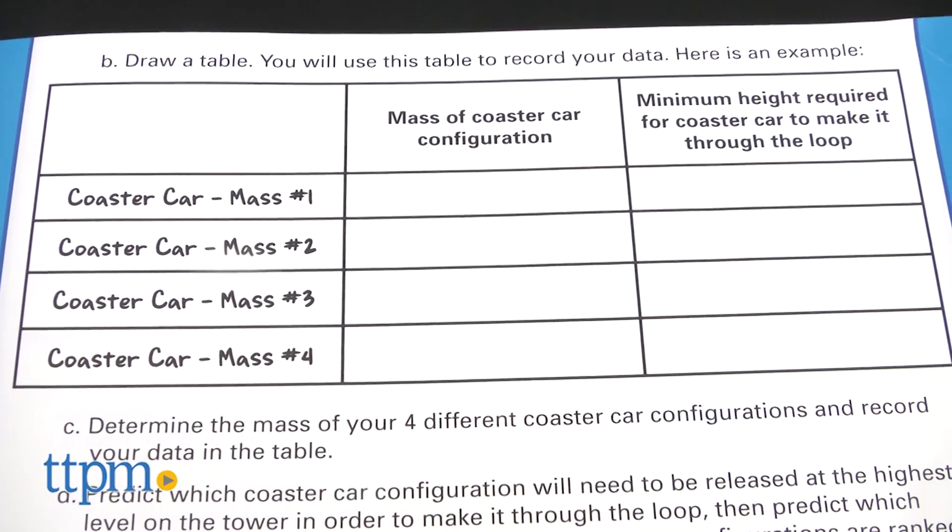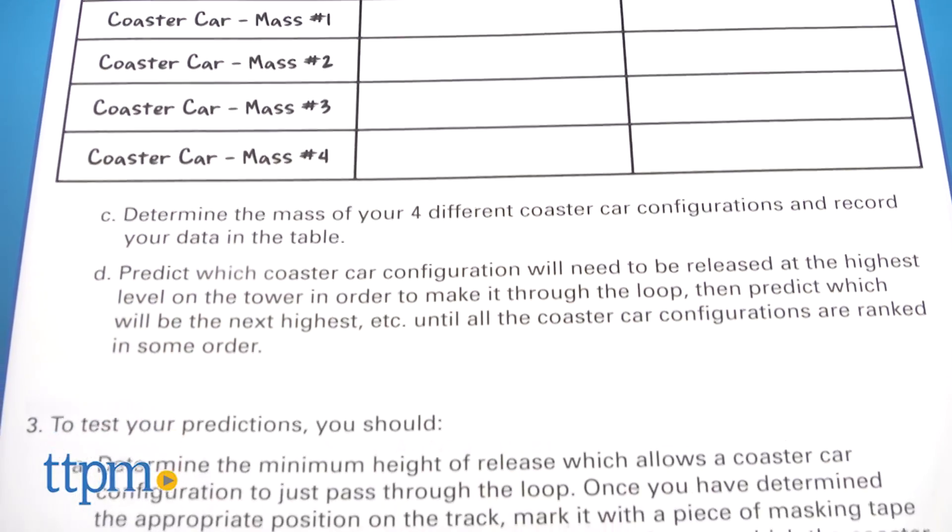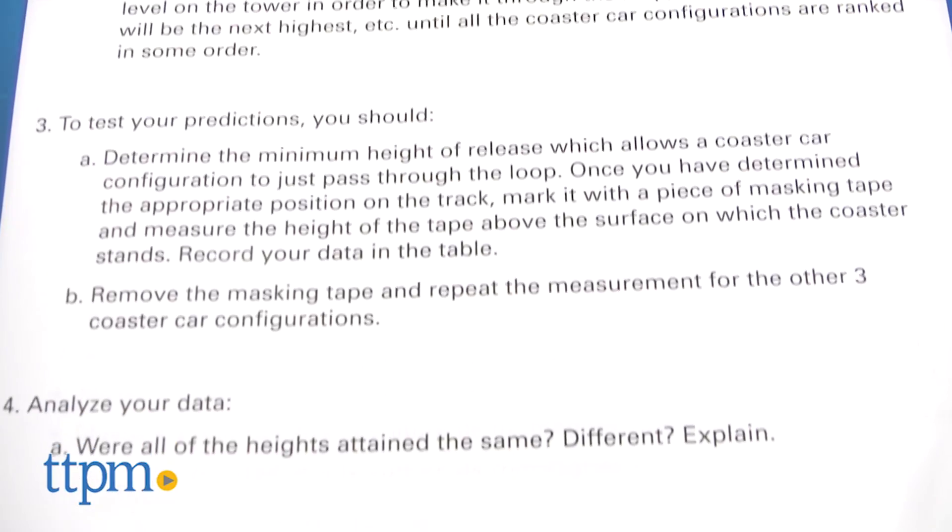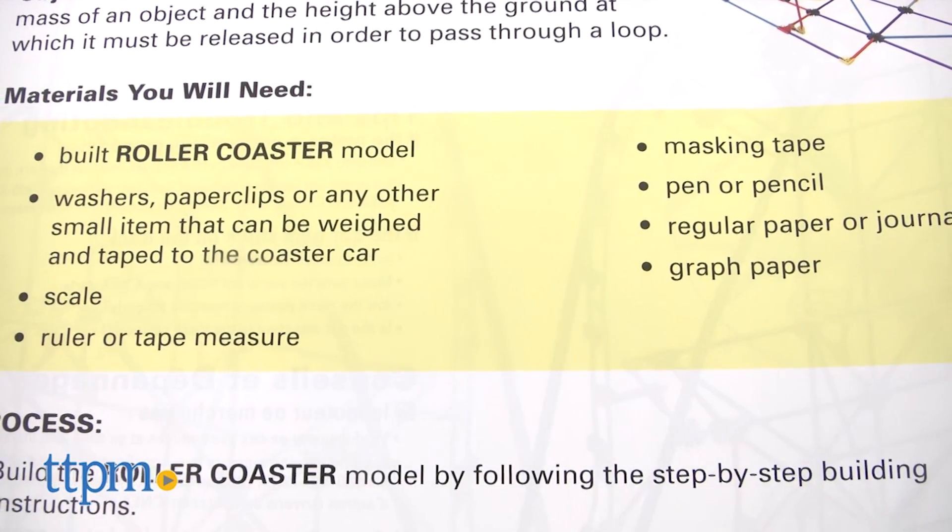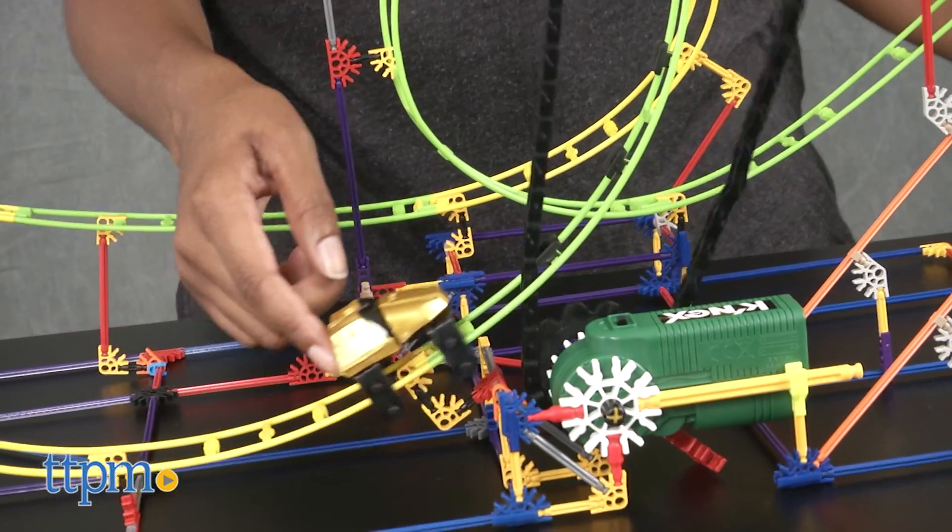Once you build your roller coaster, it's time to determine the relationship between the mass of an object and the height above the ground at which it must be released in order to pass through the loop using the materials listed in the guide. Complete the experiment and answer the related experiment questions.